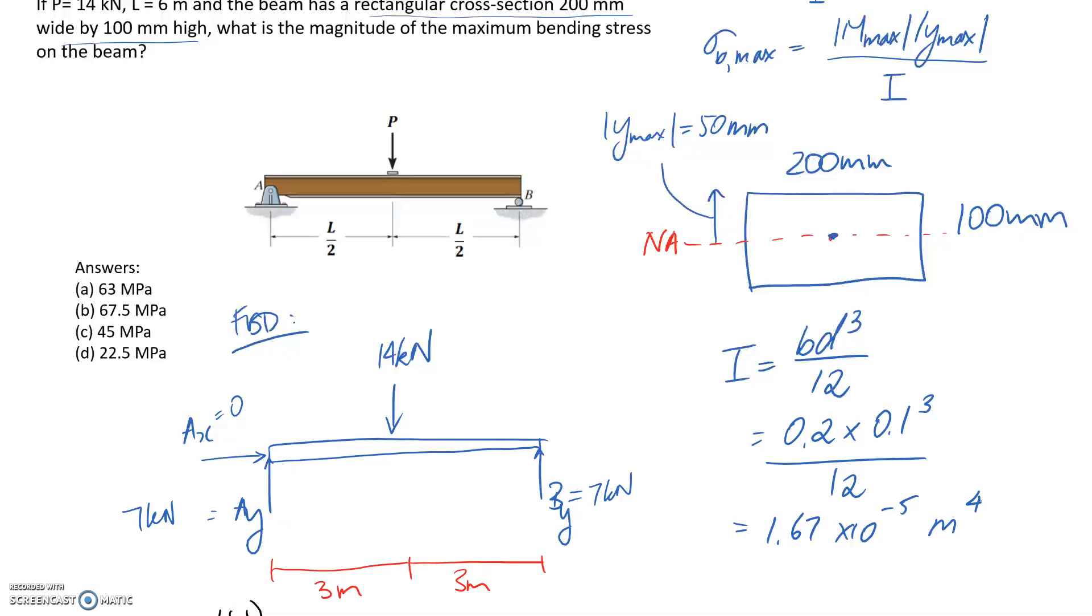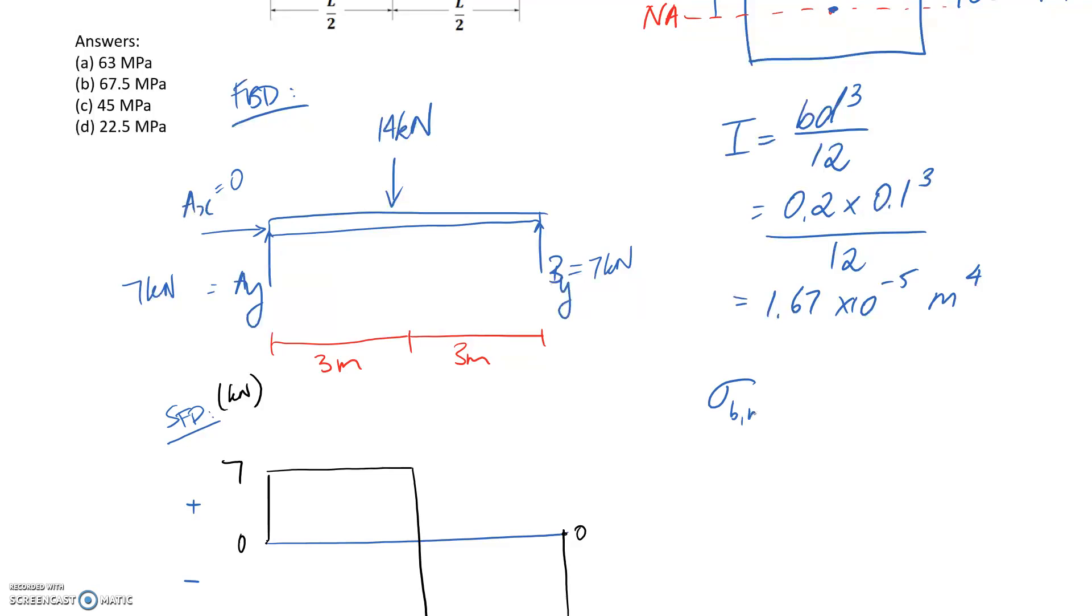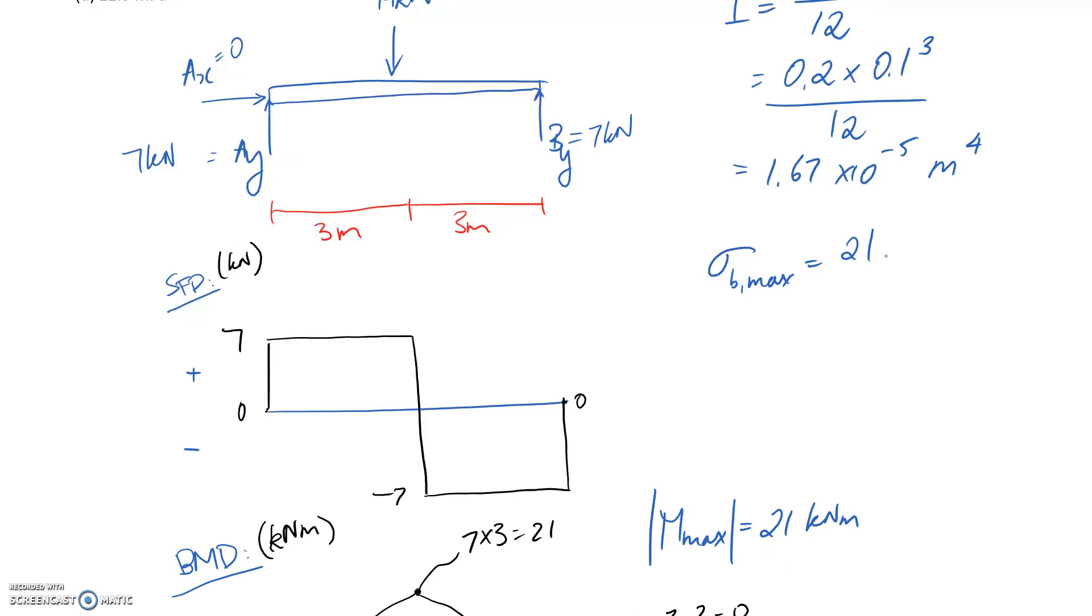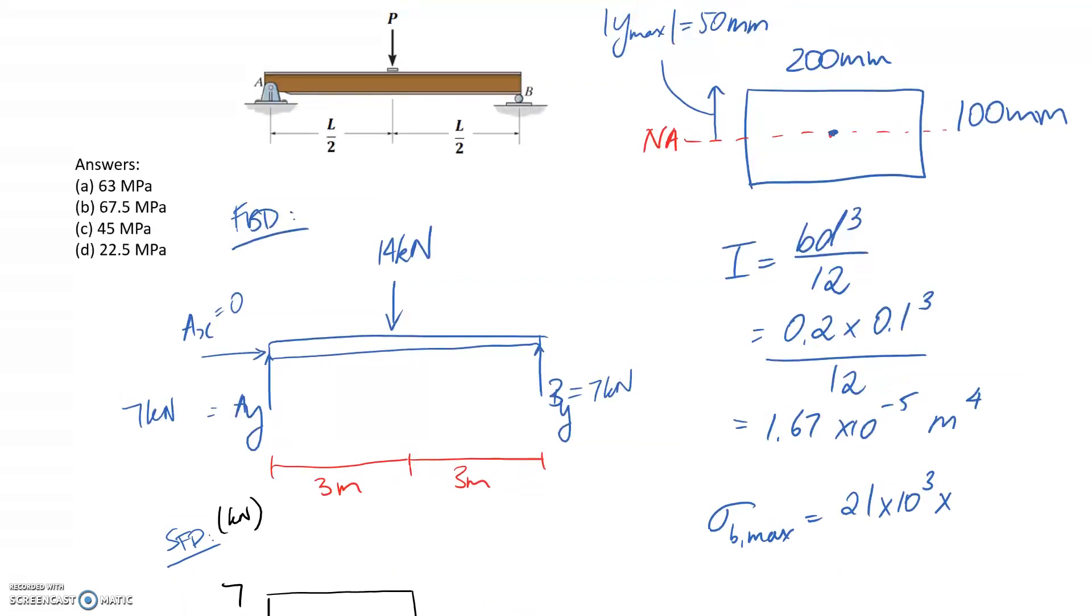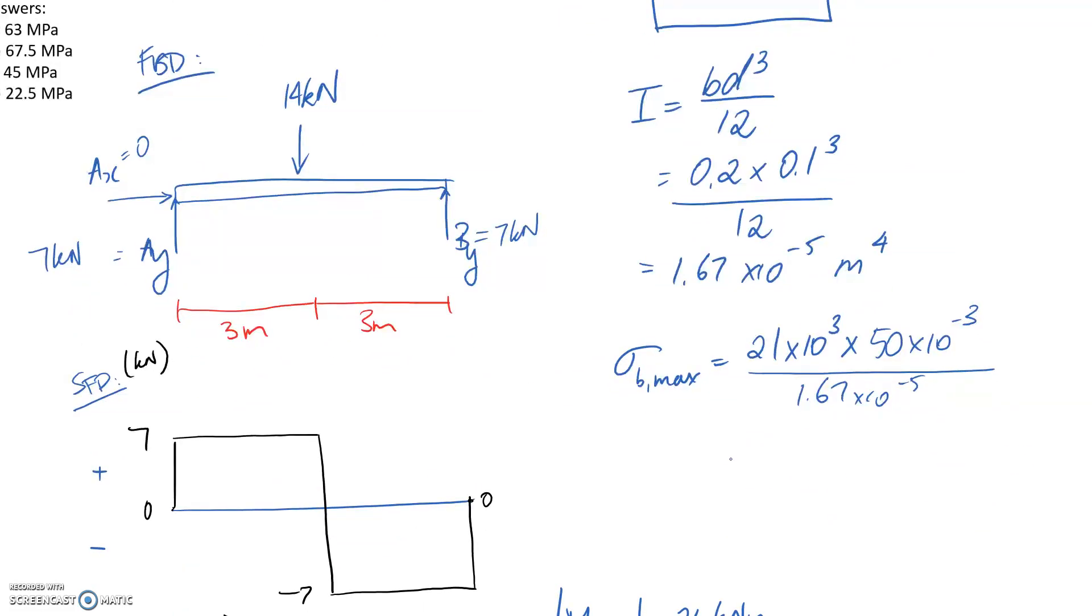So all we need to do now is substitute all these values that we've found back into our stress equation. So the maximum moment we said was 21 kilonewton meters. So I'm going to put this into base units. So I need to times it by 10 to the 3. We then need to multiply it by our y value, y max, which was 50. Again, put it into base units. It's going to be 10 to the negative 3. And divide by our I value. So everything is in base units, which means that I'm going to get a stress returned in pascals. And it's about 63 by 10 to the 6.